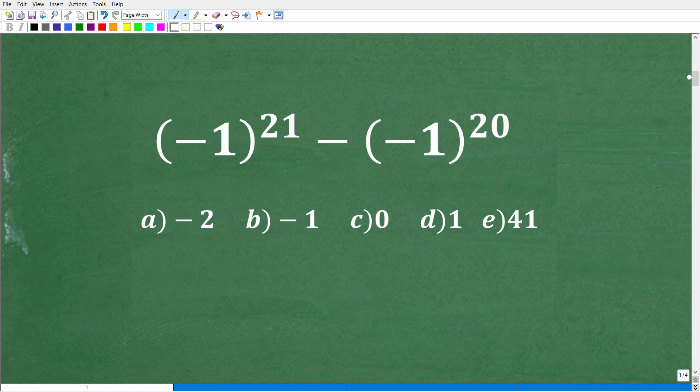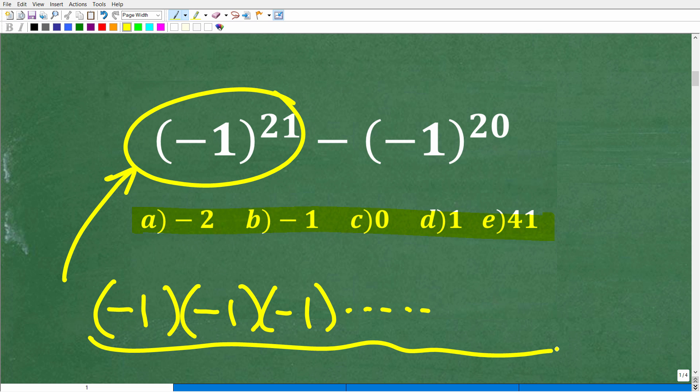Okay, so here is our problem. So we have negative one to the 21st minus negative one to the 20th. Now, what can we do here? Obviously, we have the answer choices, but that may not really help us out. There's no way to plug in here to check what's going on. So we're probably going to have to deal with this problem directly. Now, what does that mean? Well, it means that for some of you, you might be thinking to yourself, well, maybe I'm going to have to actually take negative one and multiply it by itself 21 times. So that's negative one times negative one times negative one.